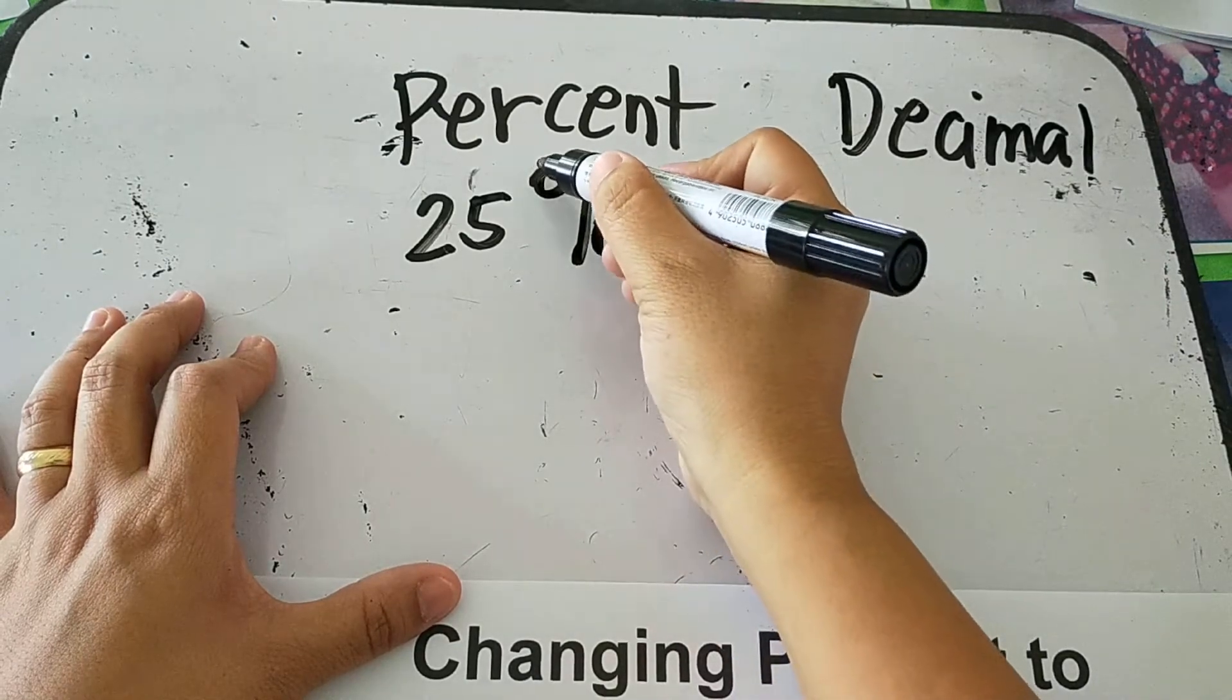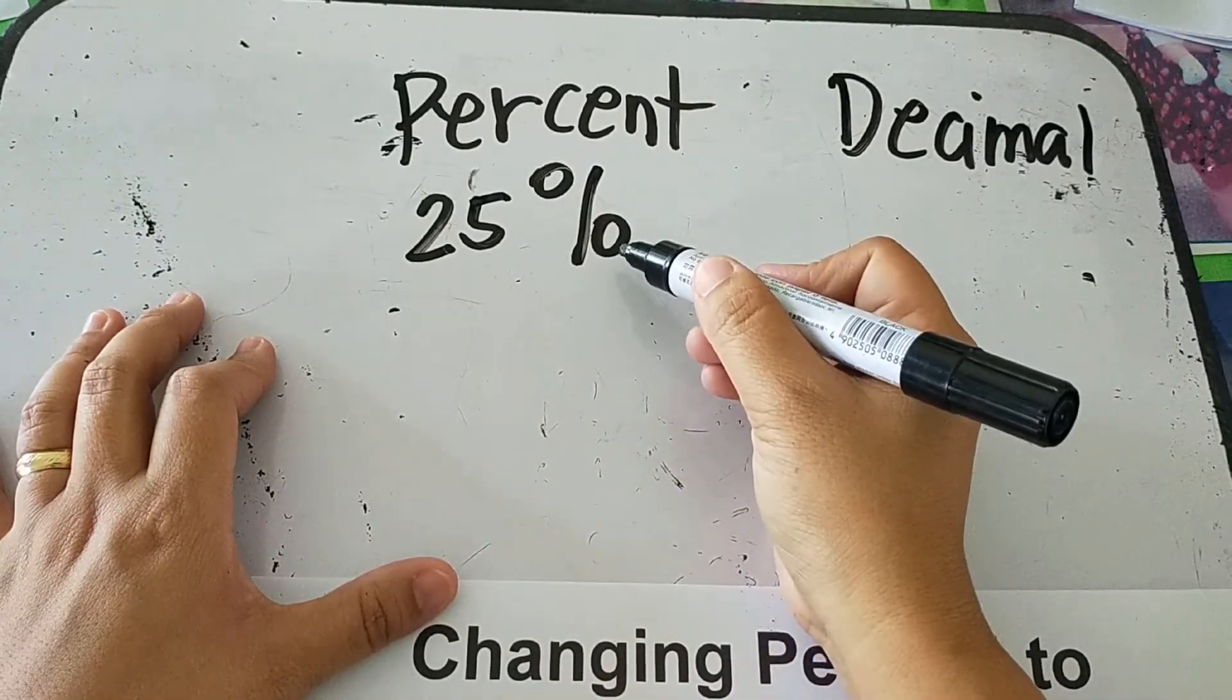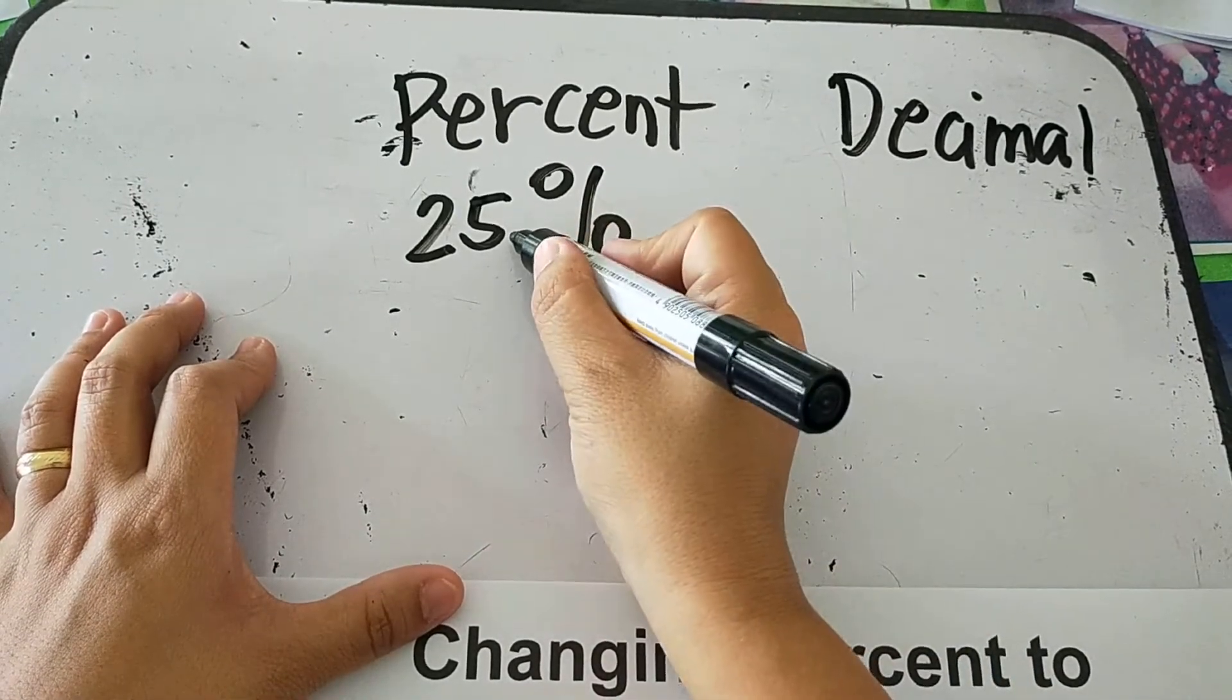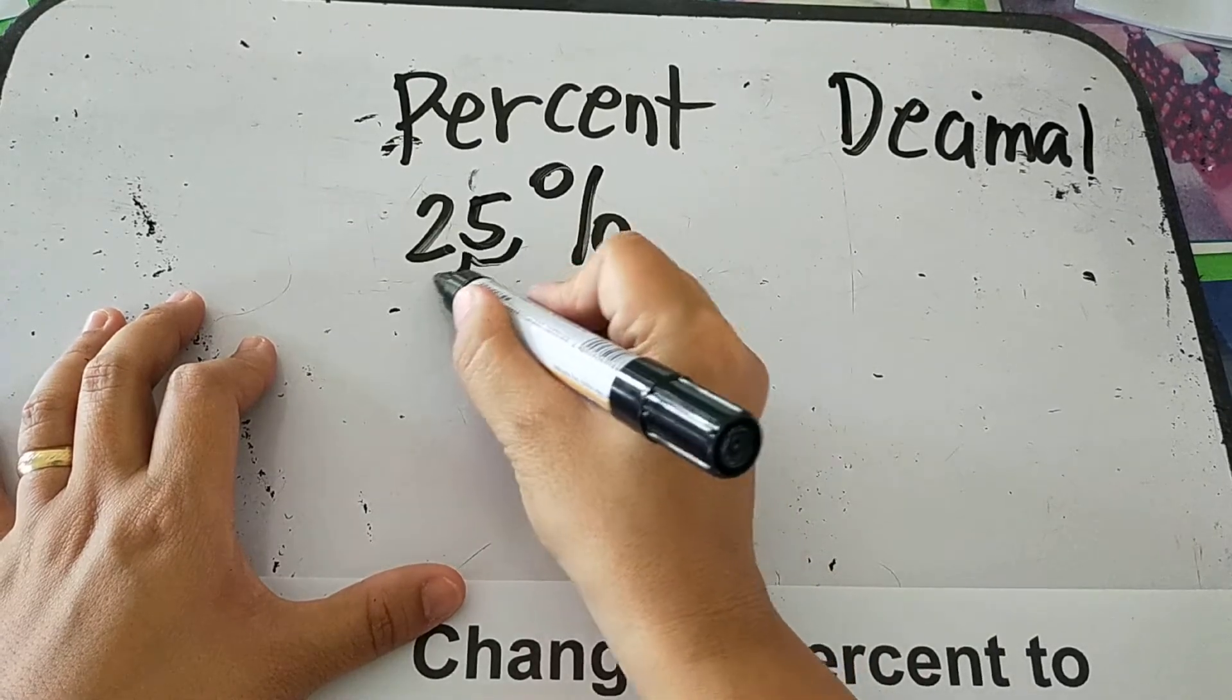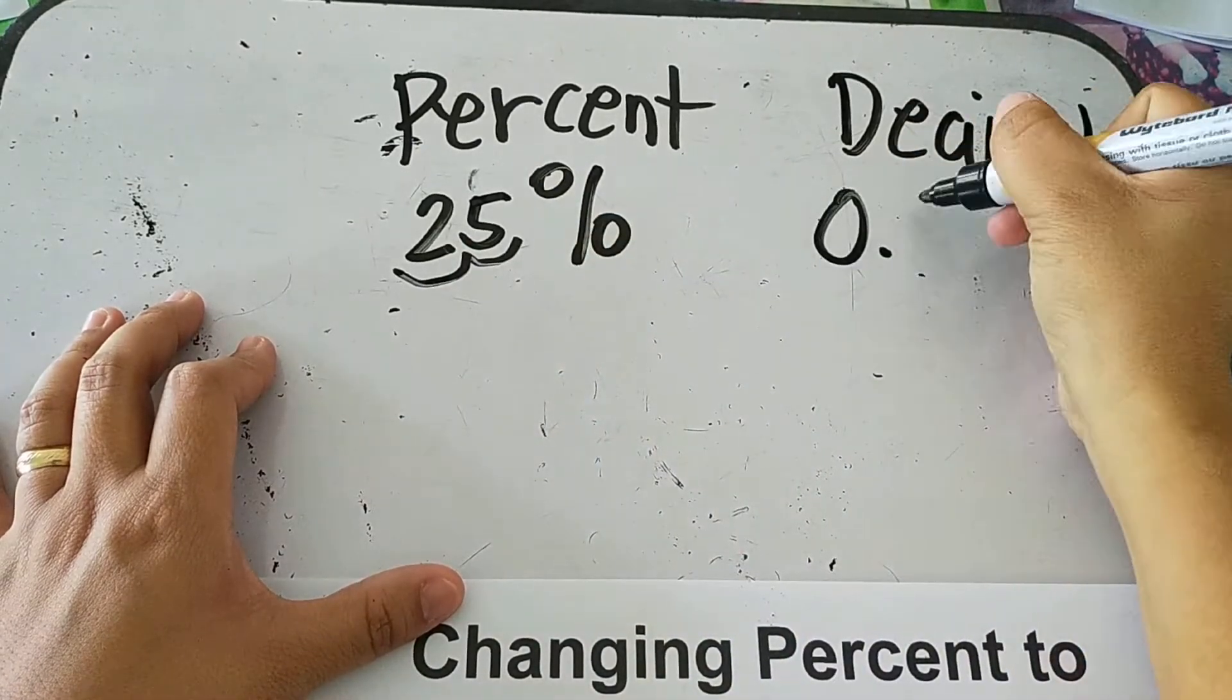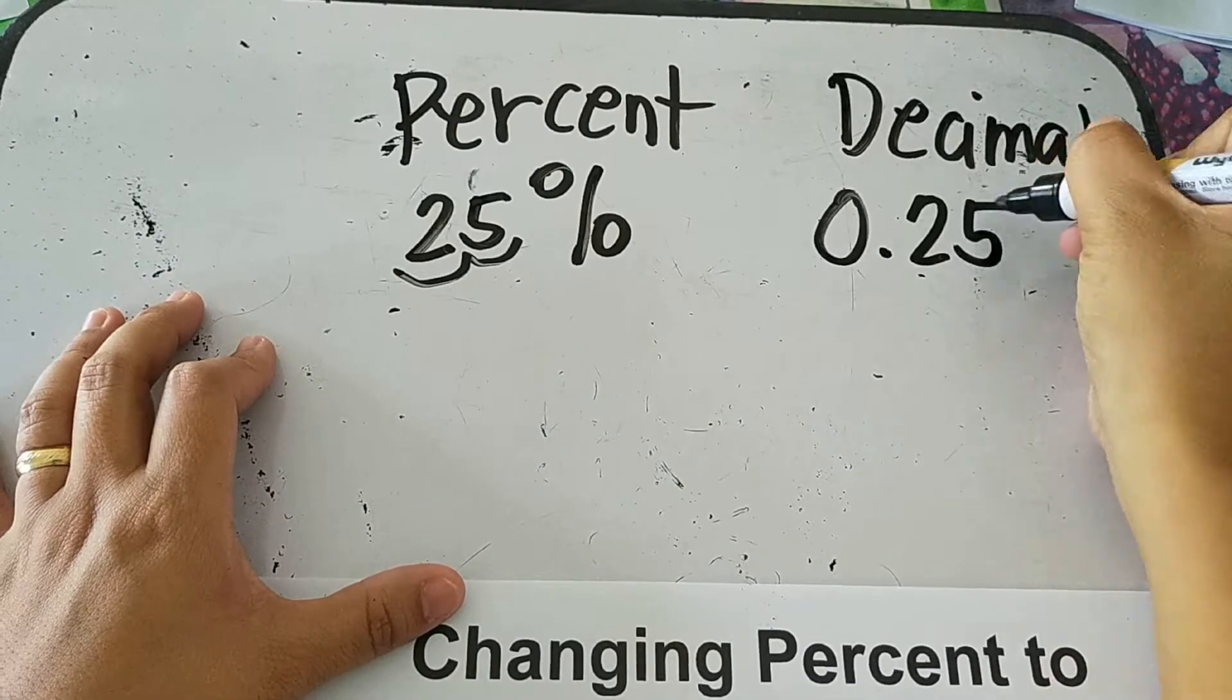How about when it's decimal? Okay, just remove the percent form and then move the decimal point to the left twice. So 0.25 or 25 hundredths.